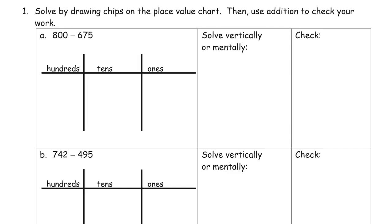800. 1, 2, 3, 4, 5, 6, 7, 8 hundreds. And I have to subtract 675. Well, we don't have any tens or ones, so we've got to work with what we have and decompose 100.